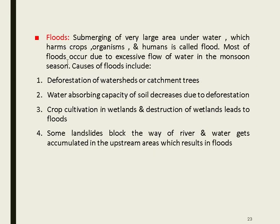Floods occur when a very large area is submerged underwater, harming living organisms. They occur due to excessive water flow in monsoon season. Causes include deforestation, which decreases soil water-absorption capacity; crop cultivation and destruction of wetlands that act as flood control systems; and landslides that block river flow, causing water accumulation upstream.